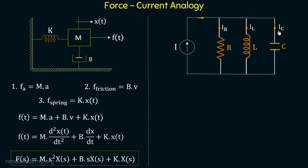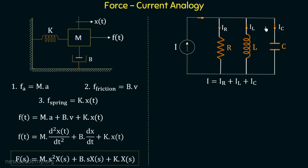Applying Kirchhoff's current law (KCL) at this node, we have I = IR + IL + IC, where I is the total current, IR is the current through the resistor, IL is the current through the inductor, and IC is the current through the capacitor. According to KCL, the total current entering a node equals the total current leaving the node. These elements are connected in parallel, so the voltage across all elements is equal.